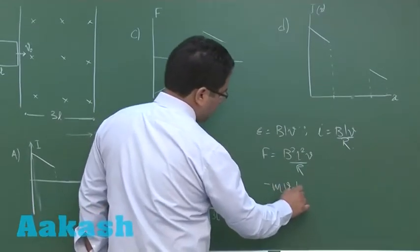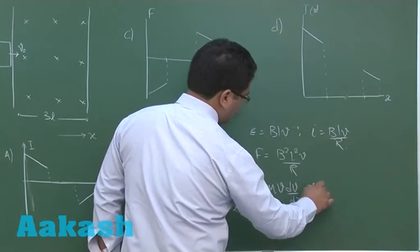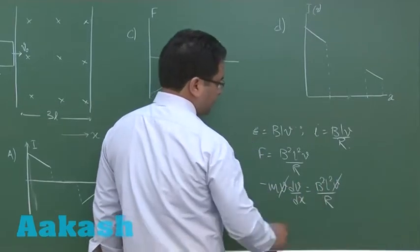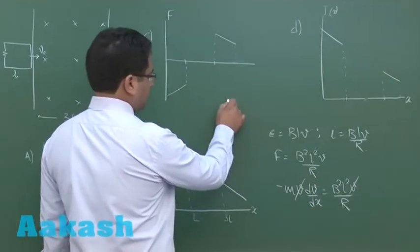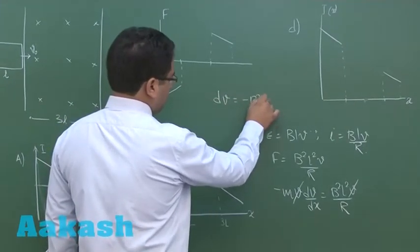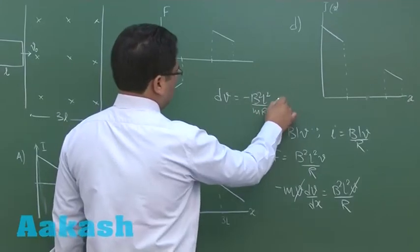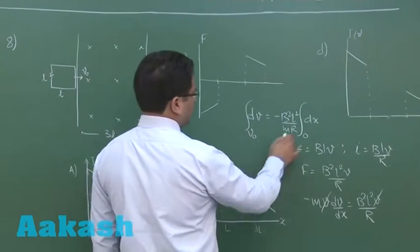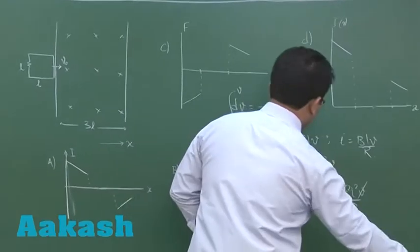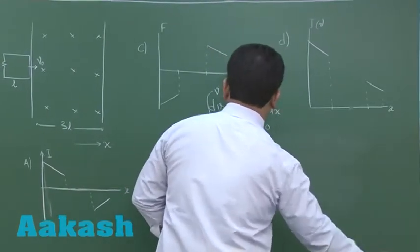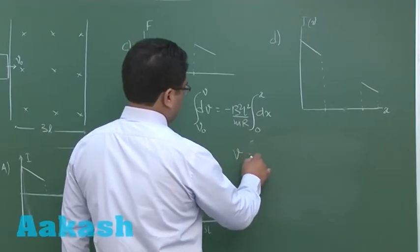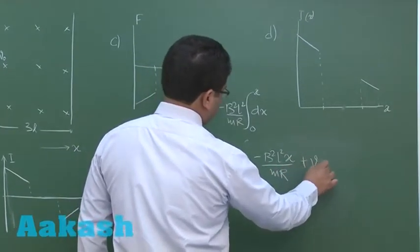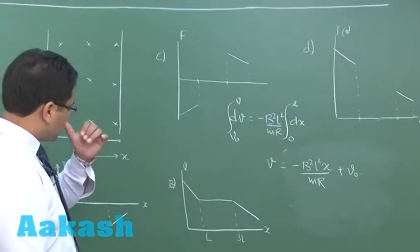The force equals −MV·dV/dx, because we need to calculate it this way, and the V's get cancelled. So eventually, dV = −(B²L²/MR)·dx. Integrating, at x = 0 the velocity is V0 and at x = X the velocity is V. This gives V = V0 − (B²L²X)/(MR). This is how velocity changes with respect to position.